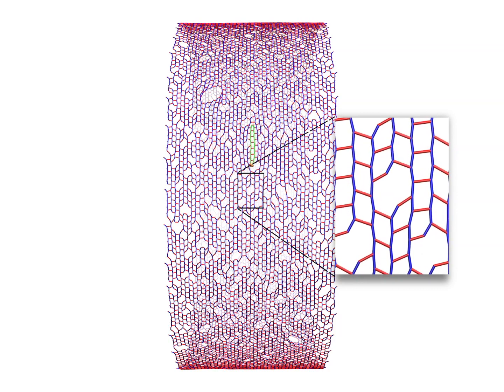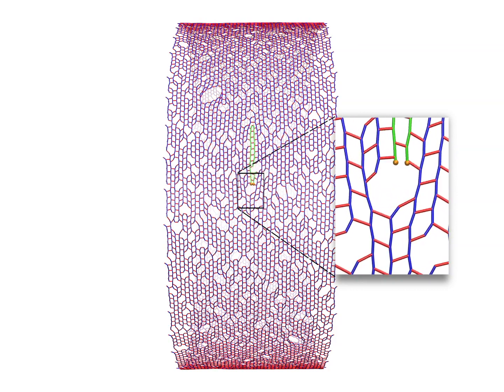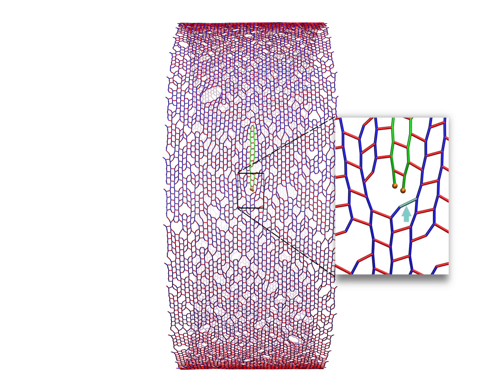When the growing tips of new glycan strands are close to a peptide crosslink like the one indicated by the arrow here, the crosslink will be cleaved and the released peptides used to connect the new glycan strands to the network.